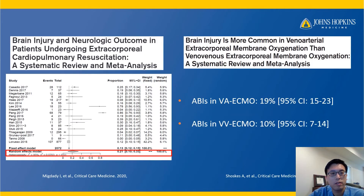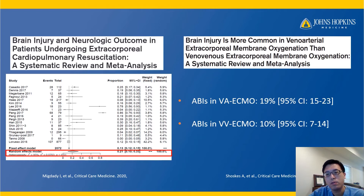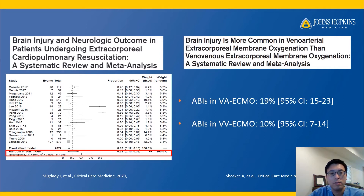Now let's talk about observational studies. There are two large meta-analysis papers on this topic. The first paper focused on ECPR patients — over 6,000 patients — and the weighted prevalence of ABIs was 21%. The second paper looked at VA ECMO non-ECPR and VV ECMO patients, over 16,000 patients. ABIs in VA ECMO was 19%, higher than those in VV ECMO at 10%. These numbers are higher than what's reported in the ELSO registry, which probably underestimates the number of ABIs in ECMO patients.